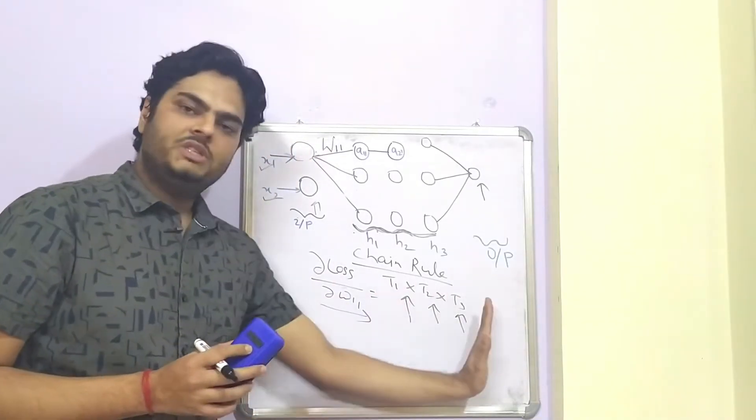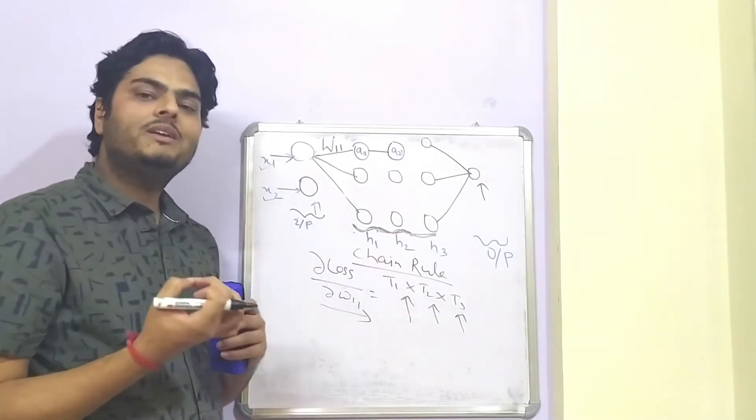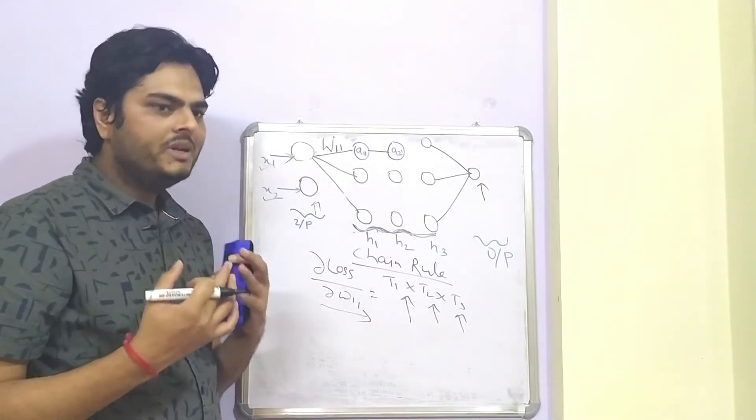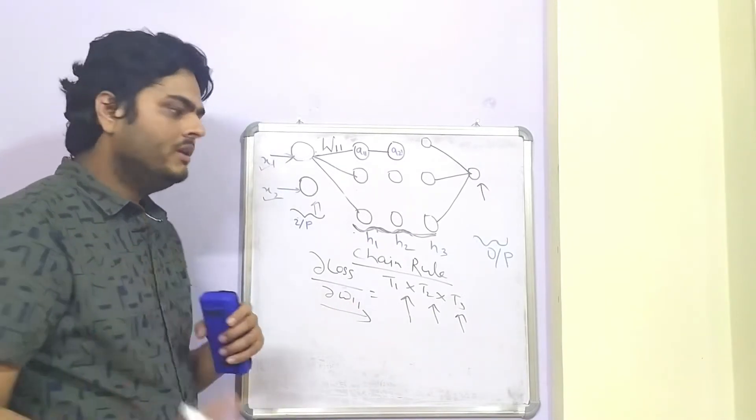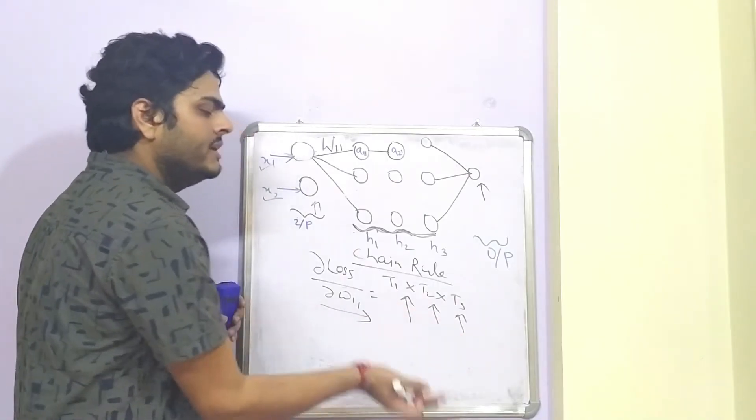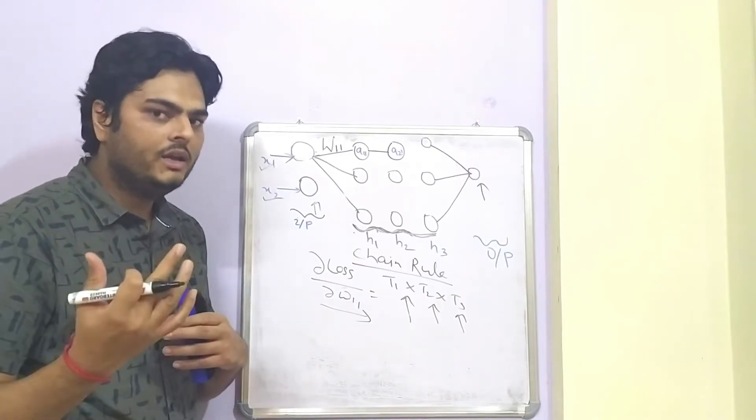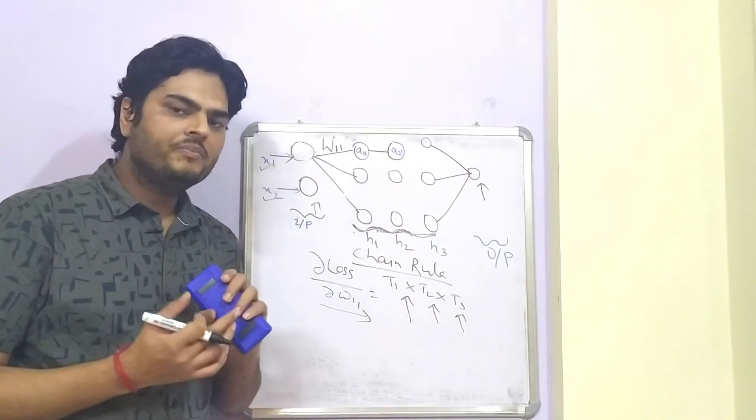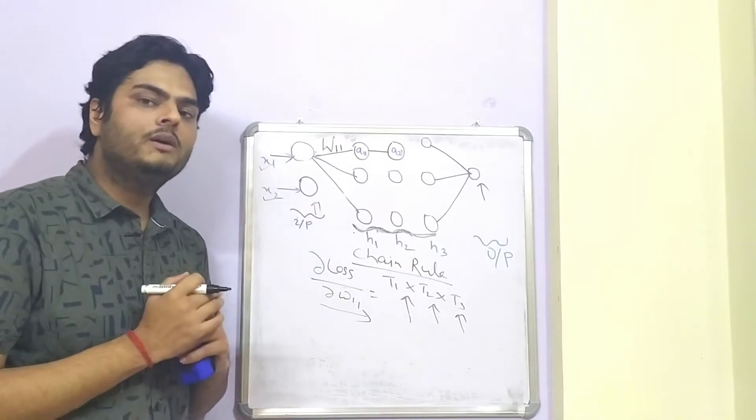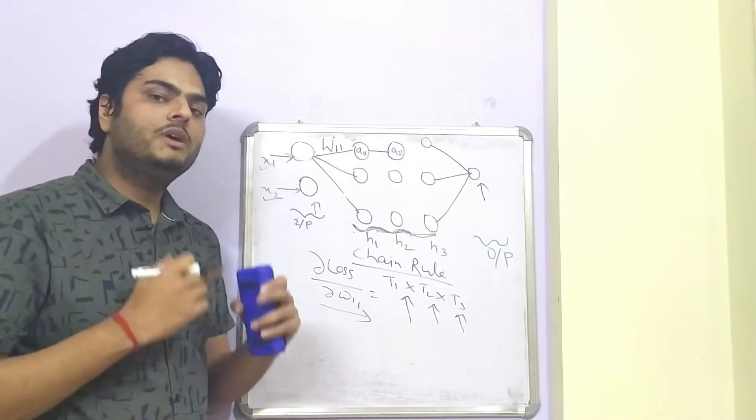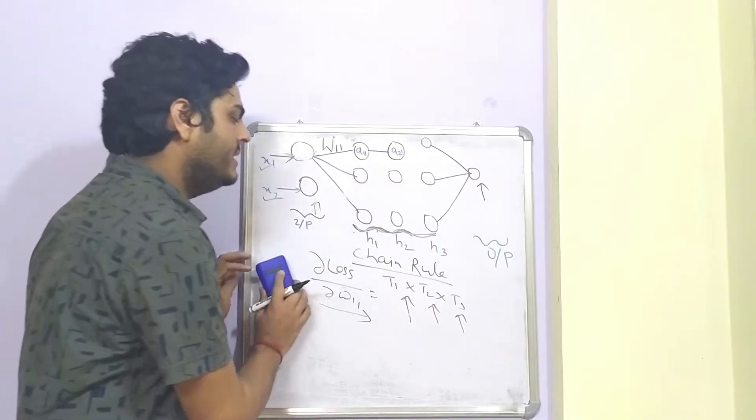So, in this multiplication of chain rule, what will happen when all these numbers are a decimal number less than 1? The final value will become lesser than all these three numbers. And what will happen when all these three numbers are greater than 1? The final value will become too high, too high than all these numbers. And when you plug this derivative in that gradient descent formula, the gradient will never optimize, the value will never optimize. Let's try to understand with this diagram and data.